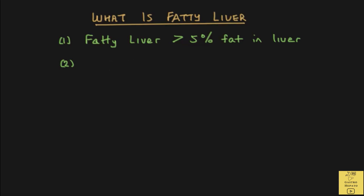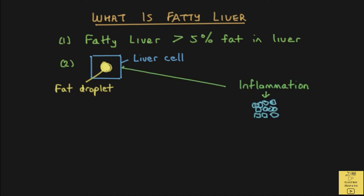What are the consequences of fat accumulation in the liver? Here you can see a liver cell with a fat droplet within it. The fat droplets inside the liver cells trigger inflammation of the liver. In the process of inflammation, some of these healthy cells die.